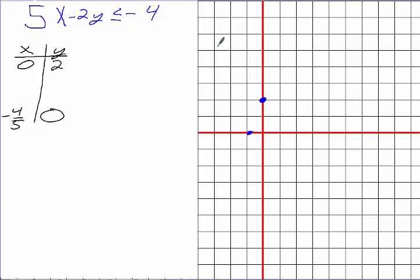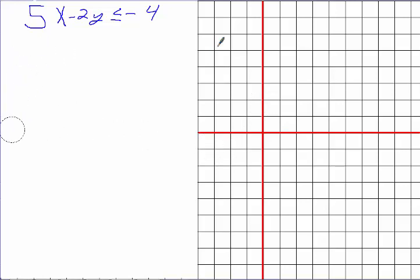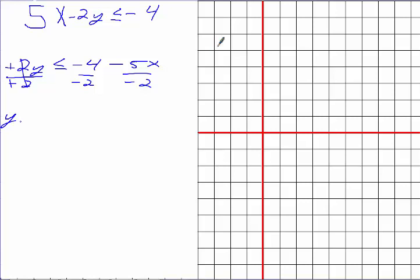When y is isolated, it's really easy to tell which way to shade. If it's y greater than, you shade above. If it's y less than, you shade below. For this one, the issue is that the sign on y is a negative, which means the inequality sign has to flip. So if you graph it the way it looks, you'd shade below when you should really be shading above. So I'm going to get y by itself — subtract 5x, then divide by negative 2.